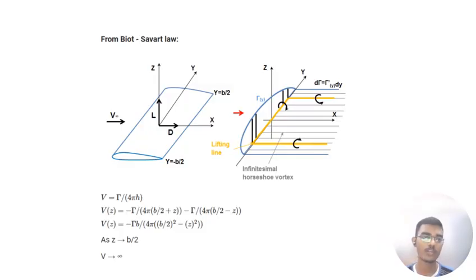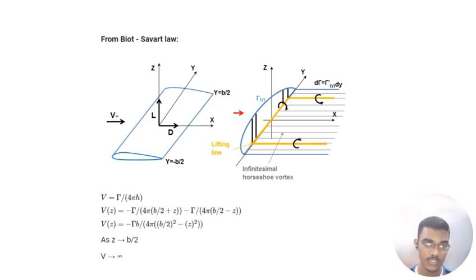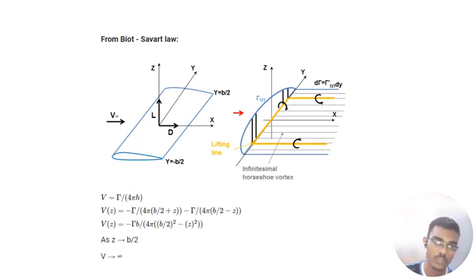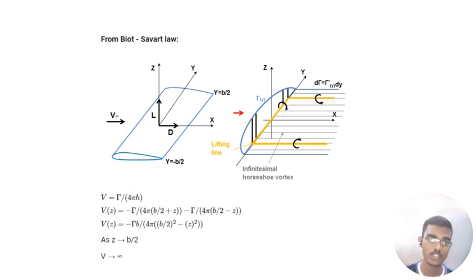From the Biot-Savart law we can write v is equal to gamma divided by 4 pi h. There are two images shown: one of an aerofoil and another of a horseshoe vortex. This is called a horseshoe vortex because there are free trailing vortices on the right side and the left side, and the line connecting the two free vortices is called the bound vortex line.